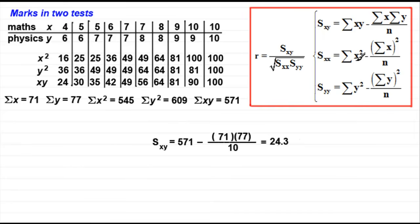Now I'll leave it up to you just to work out what sxx and syy are. You might like to pause the video if you just want to try and work those out. Welcome back if you had a go. And sxx, how did you get on with that? You should have 40.9. Syy comes out at 16.1.